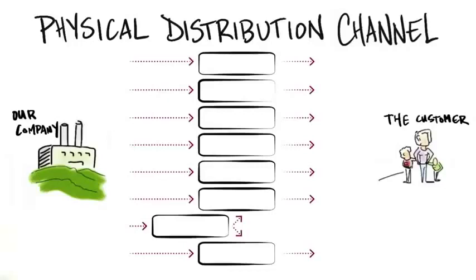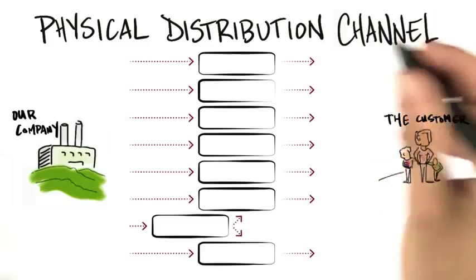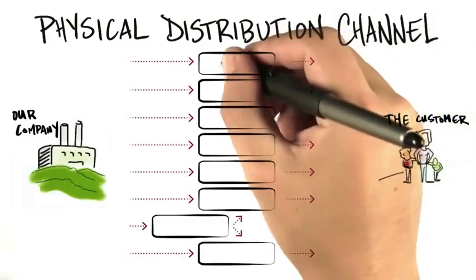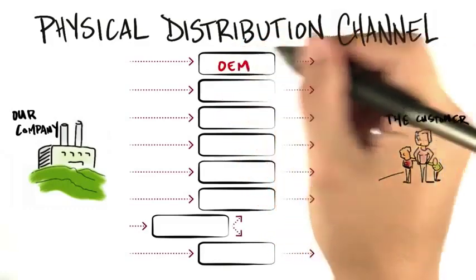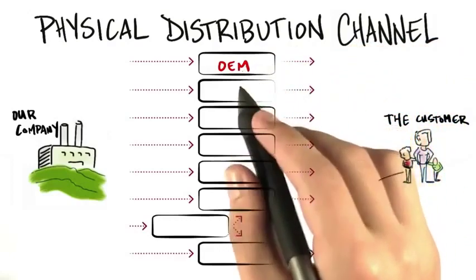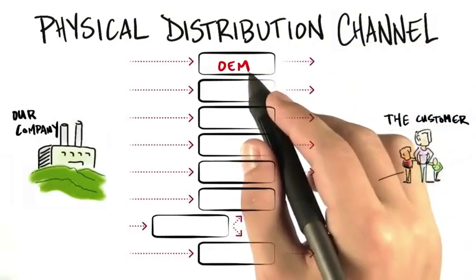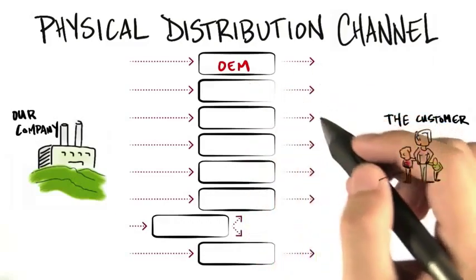Maybe your product requires a physical distribution channel. Let's take a look at all the choices that you might have when you start your company. The first one is you might be an OEM. OEM stands for original equipment manufacturer. You might have a component, let's say a graphics chip, that goes inside of someone else's laptop.